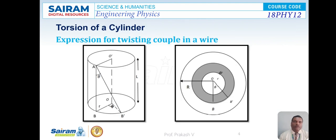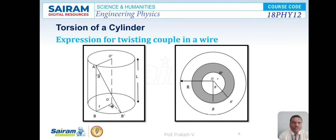Next, torsion of a cylinder — the expression for twisting couple in a wire. Here you can look at a picture. A wire is considered as a cylinder. Consider a long cylindrical rod of length L and radius R. Let O' be its axis. We can imagine the cylindrical rod to be made of thin concentric hollow cylindrical layers, each of thickness dr. If the rod is twisted at its lower end, then the concentric layers slide one over the other. This moment will be zero at the fixed end and it gradually increases along the downward direction.